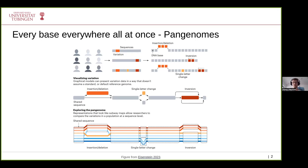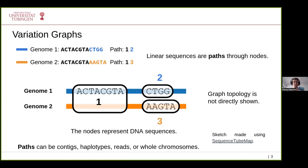We can also visualize a pangenome graph in a tube-map-like way. A specific pangenome graph model called a variation graph represents all sequences as paths that go through nodes. These paths can be contigs, haplotypes, reads, or even whole chromosomes. For example, two genomes share some sequence and both visit node number one, but then their sequences diverge and they visit different nodes.